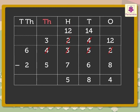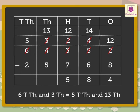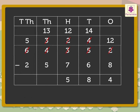Now subtract the thousands. That is, 3 minus 5. As the thousands are not enough, we regroup the ten thousands. That is, 6 ten thousands and 3 thousands is equal to 5 ten thousands and 13 thousands. Therefore, 13 minus 5 is equal to 8 thousands.